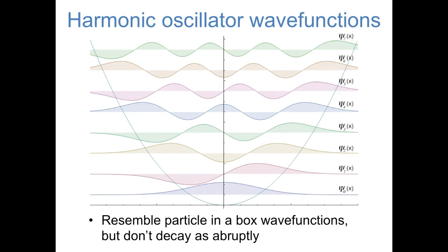I'd like to take a minute to point out that the way the vertical axis is used in figures like this is kind of confusing. The vertical axis is intended to represent energy. The potential energy operator gets higher in energy as you move away from the center, and the height of each of these wave functions represents the fact that wave functions with more nodes are higher in energy. But the fact that each wave function oscillates up and down doesn't mean that the energy of each wave function is getting higher or lower — it just means that the value of the wave function is getting higher or lower. So in a sense, this vertical axis is actually being used for two different things: mostly for energy, but within each wave function it's being used for the value of the wave function. So be careful of that confusion.